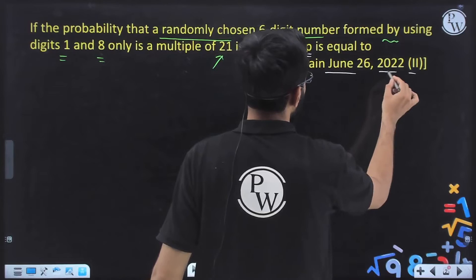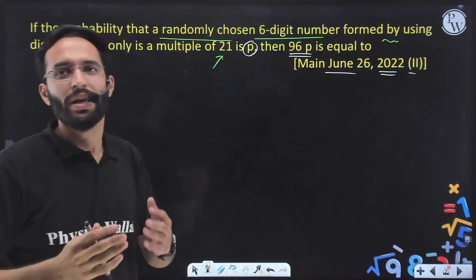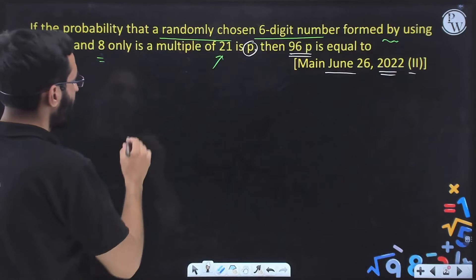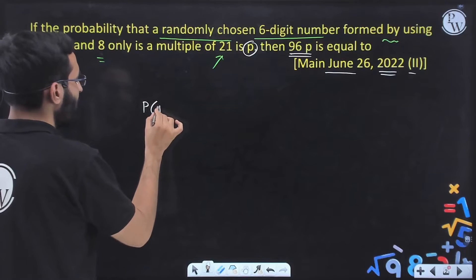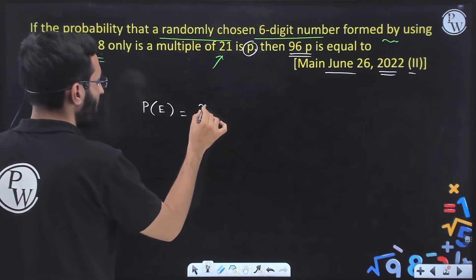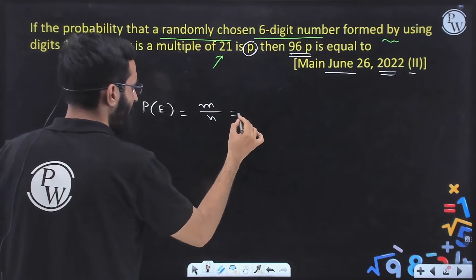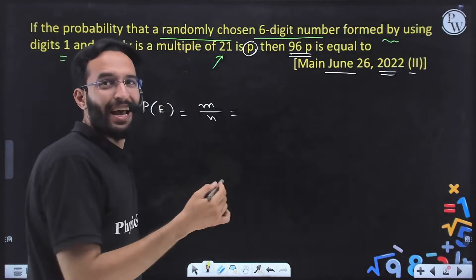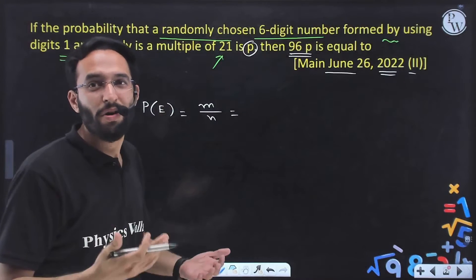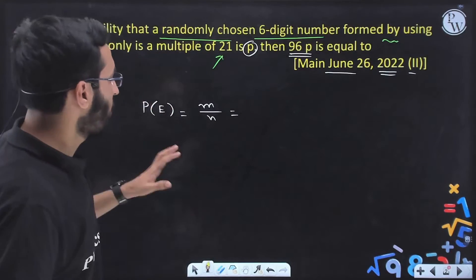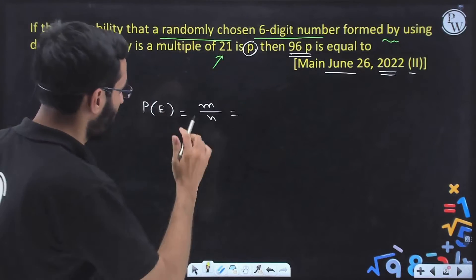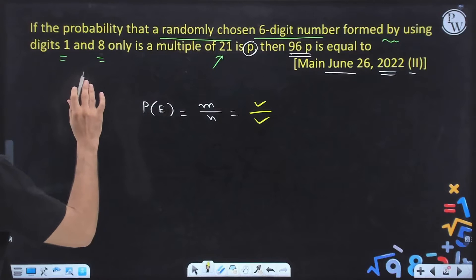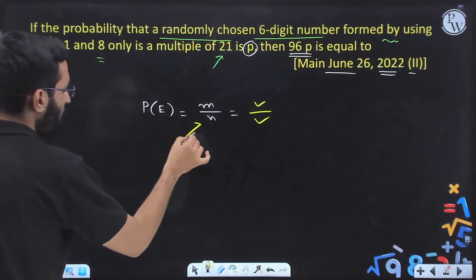Let us do this question one by one. We can find the probability of any event by the simple formula m by n, where m is the number of outcomes favorable to the event and n is the total number of outcomes — or number of elements in the sample space. So let us try to find values of m and n. First we will try to find n.